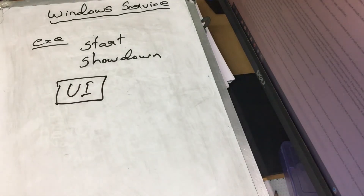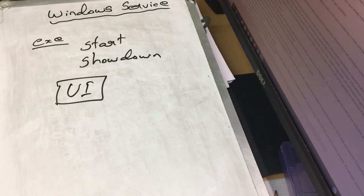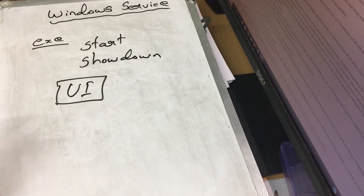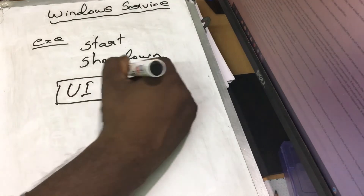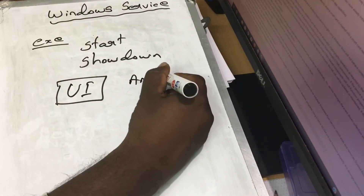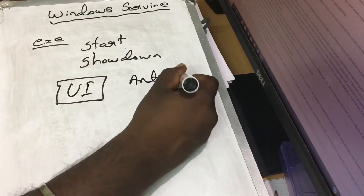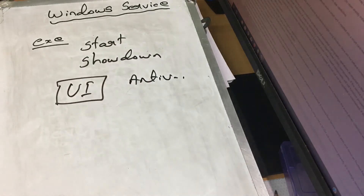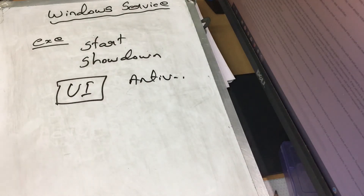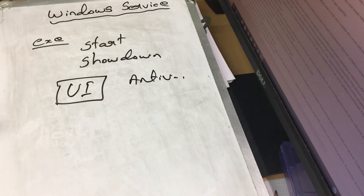If you use any background process, you will run it in the background. For example, there is antivirus software — in antivirus software, you will run it in the background, but it does not have a UI. You will run it as a background process.